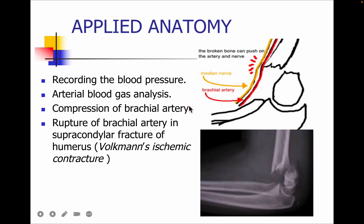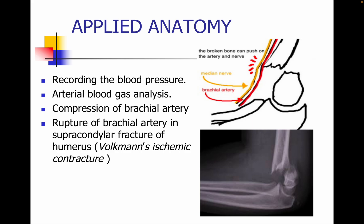In applied anatomy, the brachial artery is commonly used for recording blood pressure and for arterial blood gas analysis. There can also be compression of the brachial artery. There is also the concept of rupture of the brachial artery — whenever there is a supracondylar fracture of the humerus bone, it can lead to a condition known as Volkmann's ischemic contracture, causing ischemia and potentially necrosis of the muscles.